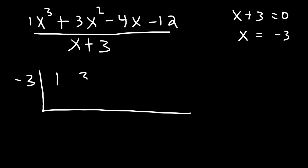Now what we're going to do is we're going to bring down the 1, and then we're going to multiply. Negative 3 times 1 is negative 3, and then add. 3 plus negative 3 is 0, and then multiply. Negative 3 times 0 is 0, and then add. So you're constantly adding and multiplying. Negative 4 plus 0 is negative 4, and negative 3 times negative 4 is positive 12, and these two numbers add up to 0.